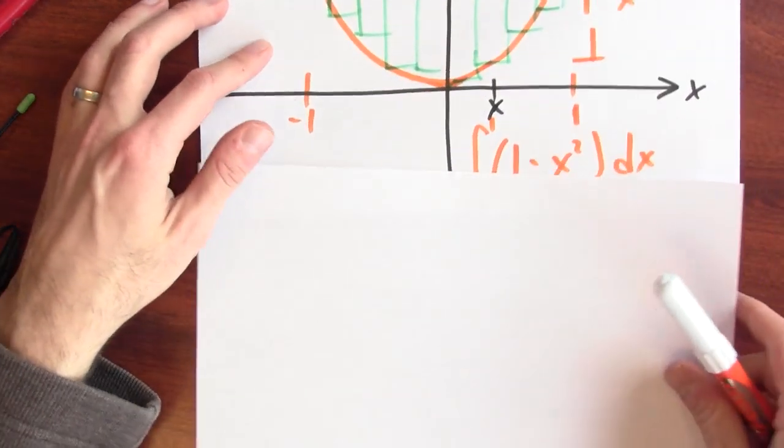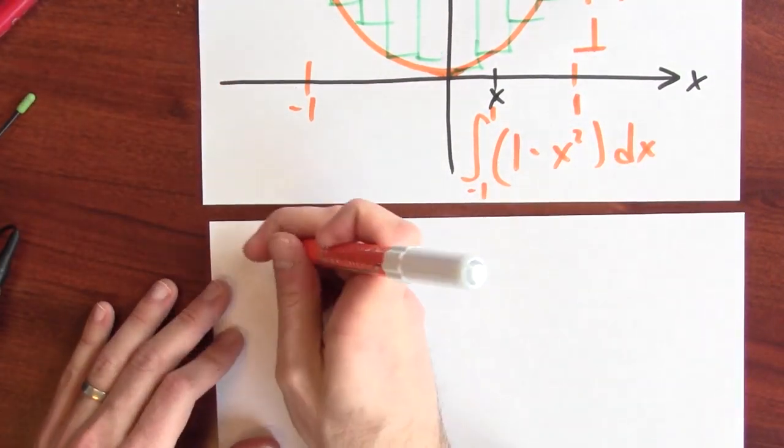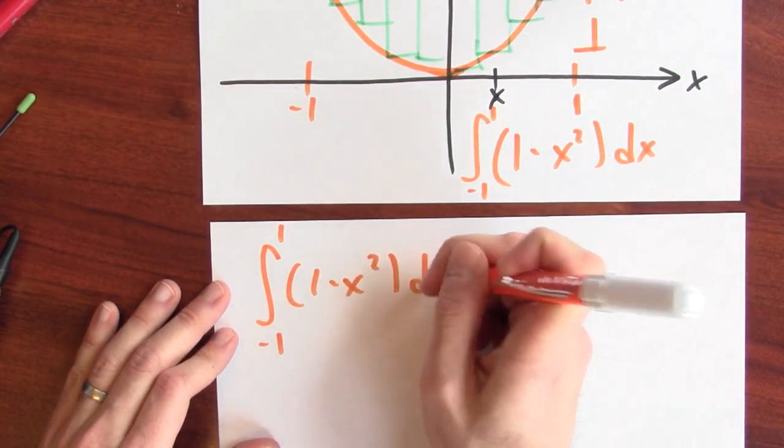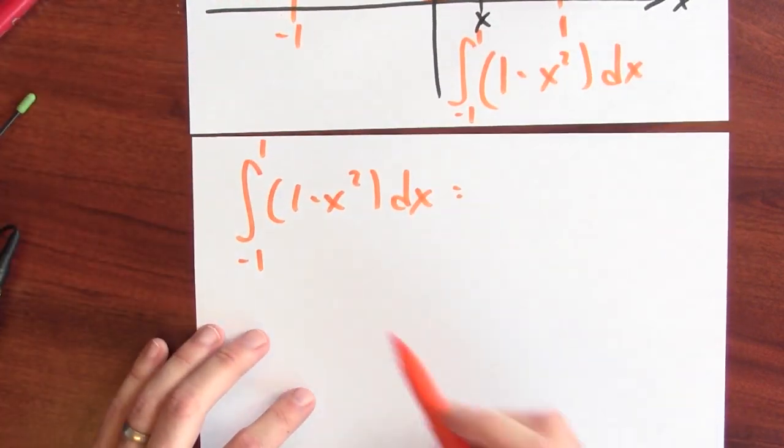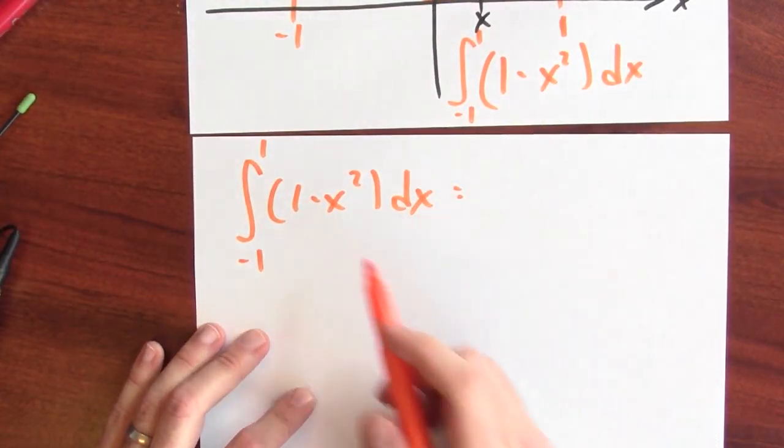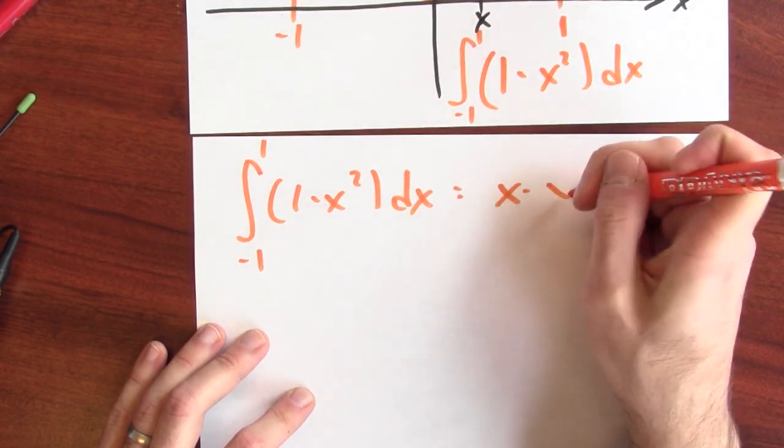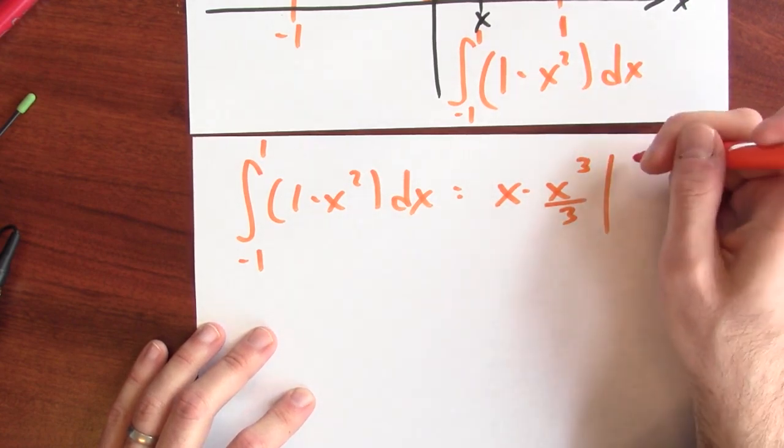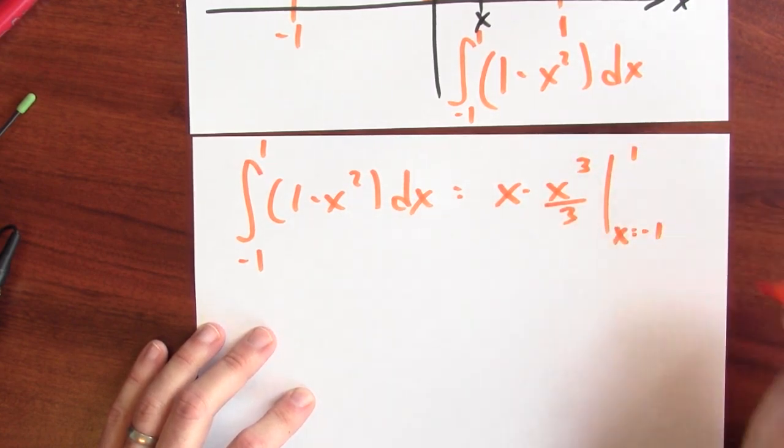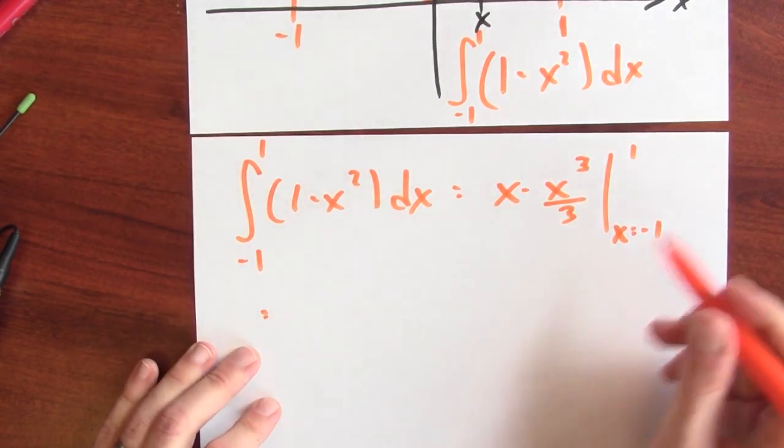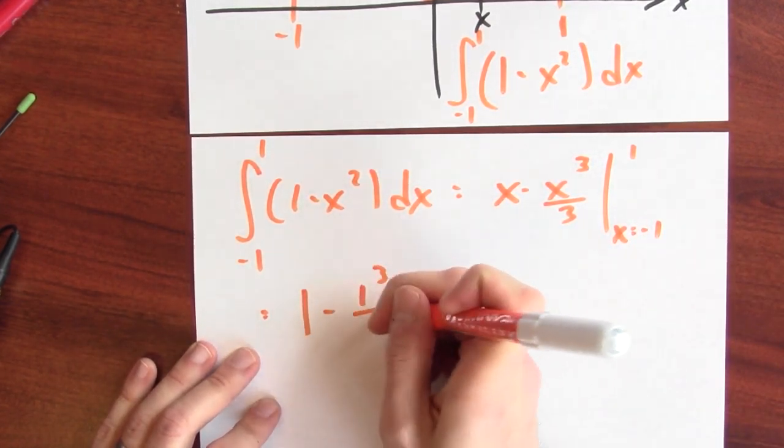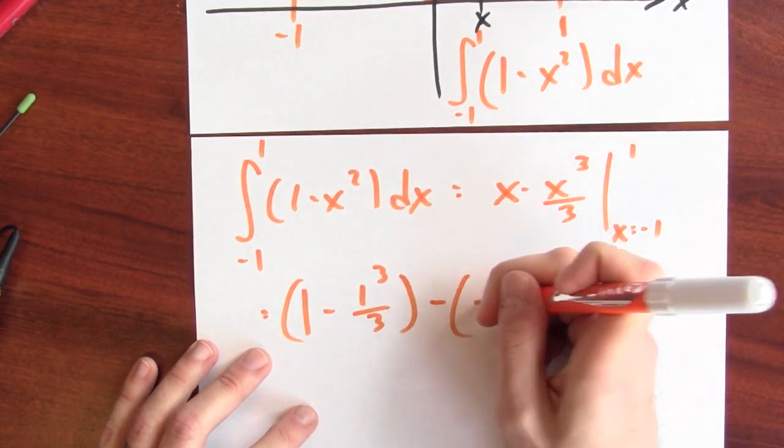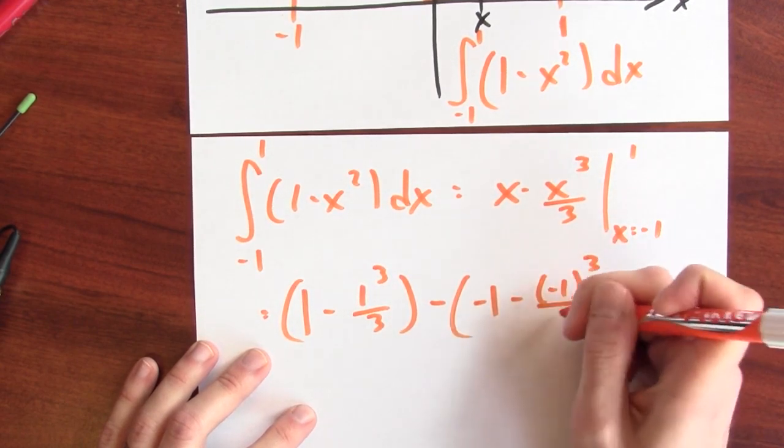And I can calculate that definite integral. Let me just copy it down here. The integral that I want to calculate is the integral x goes from minus 1 to 1 of 1 minus x squared dx. And to calculate that integral, it's enough to use the fundamental theorem of calculus. So I'll write down an antiderivative: x minus x cubed over 3 is an antiderivative. And then the fundamental theorem of calculus tells me to evaluate this at 1 and at minus 1 and take the difference. So I'll plug in 1 and I get 1 minus 1 cubed over 3. And I'm going to subtract what I get when I plug in minus 1, which is minus 1 minus minus 1 cubed over 3.